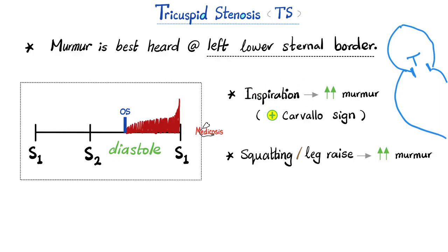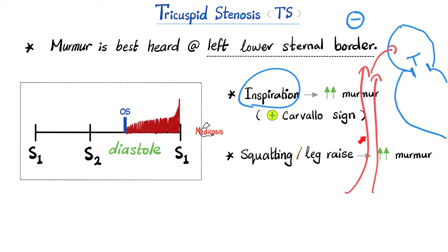When you inhale, intrathoracic pressure becomes more negative, which draws blood from the ankles up to the heart. More blood enters the right atrium, more blood passes through the narrow tricuspid valve, giving a greater murmur — more blood, more murmur. The phenomenon of murmur accentuation upon inspiration is called a positive Carvallo sign. Squatting increases preload and afterload, increasing blood across the valve — more blood, more murmur. Raising the leg also increases preload or venous return, so more blood passes the tricuspid valve equals more murmur.